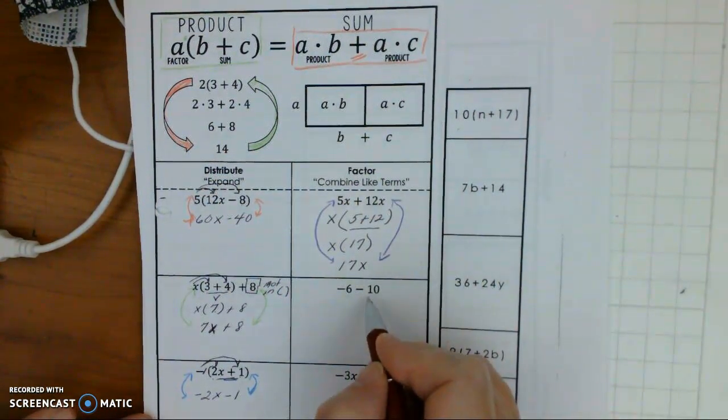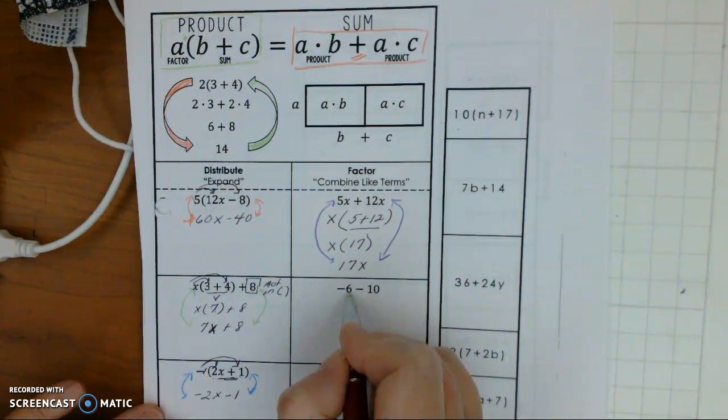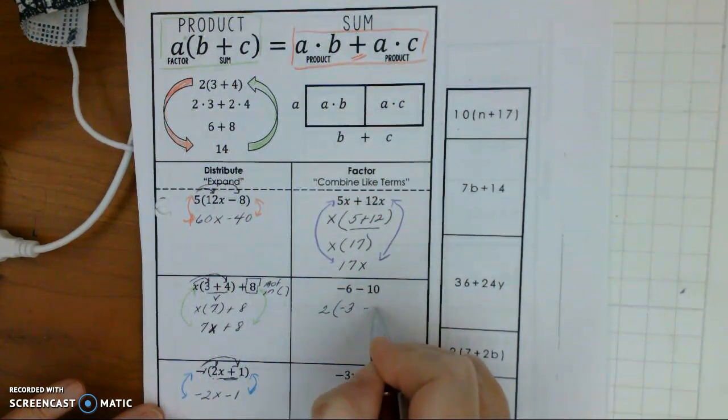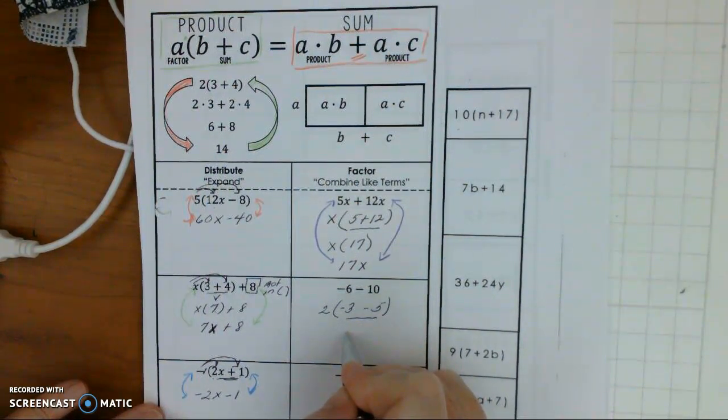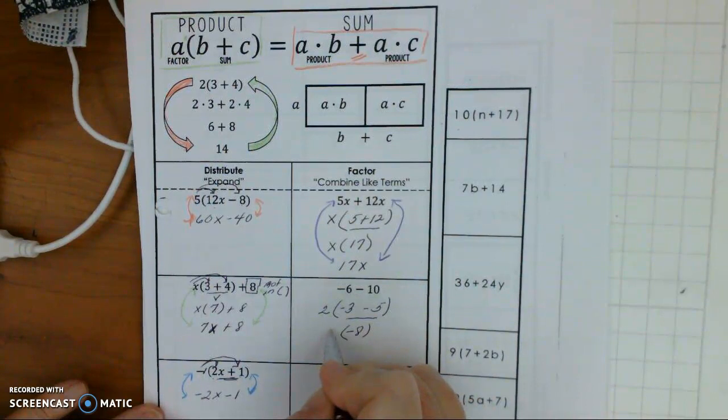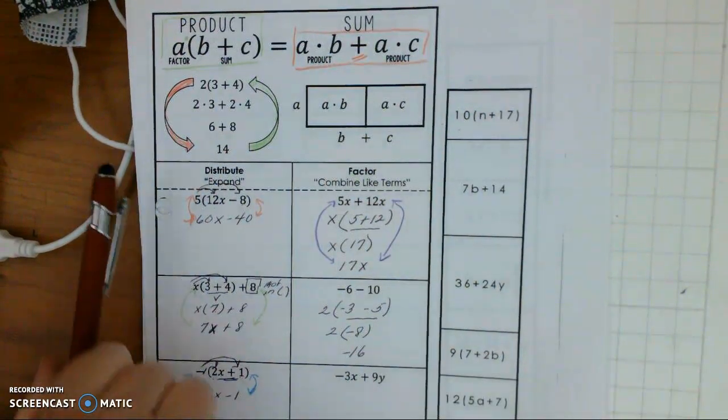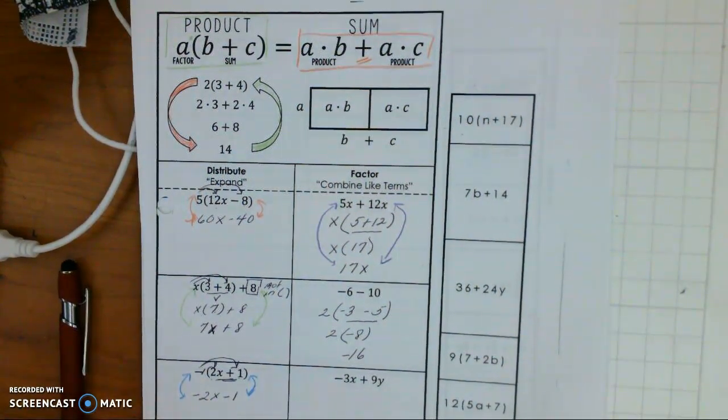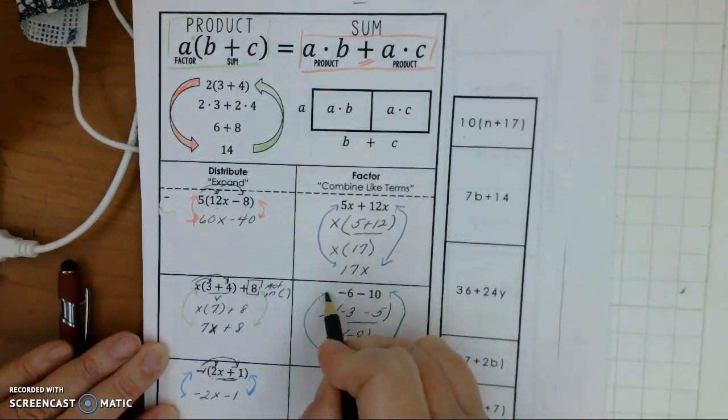Now, this one, the common factor is 2. So if I divide negative 6 by 2, I'm going to have, in parentheses, negative 3 minus 5. And then again, these are like terms. So negative 3 plus negative 5 is negative 8. So 2 times negative 8 is negative 16. Which is an equivalent expression.